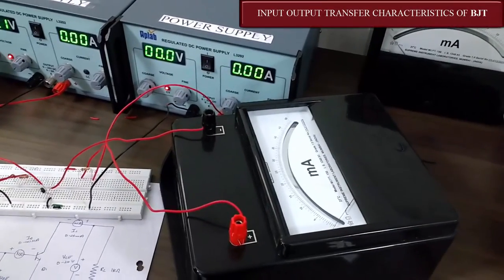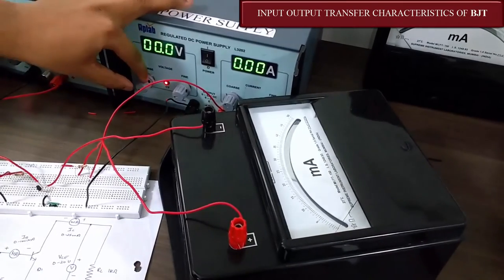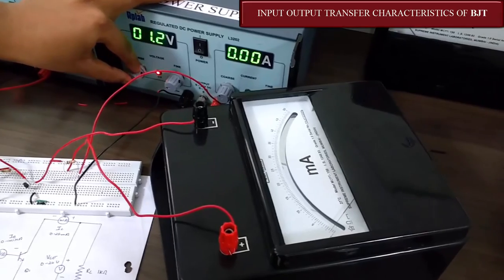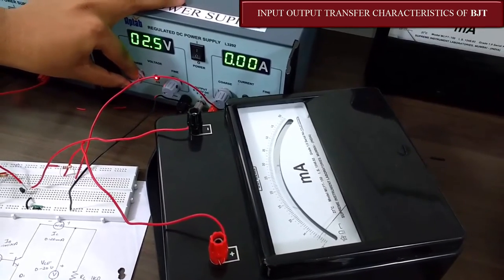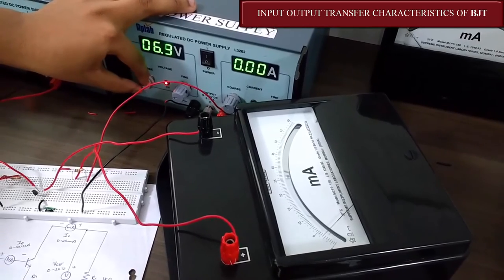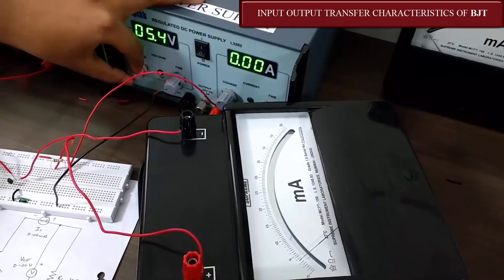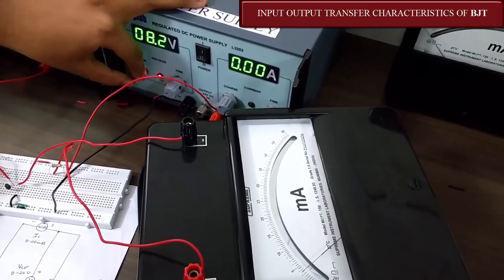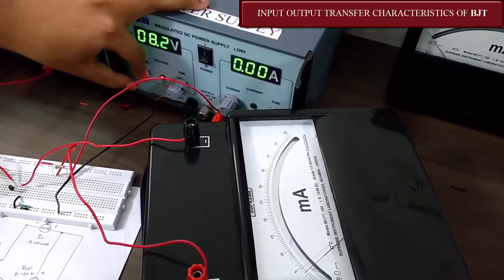Now we are going to increase VCC to see the output current IC on this milliammeter. We are slowly increasing, and there is a gradual increase in the milliammeter. The amps are increasing. After 5.5V, even though I am increasing the voltage, the current remains constant. That means IC is constant now.